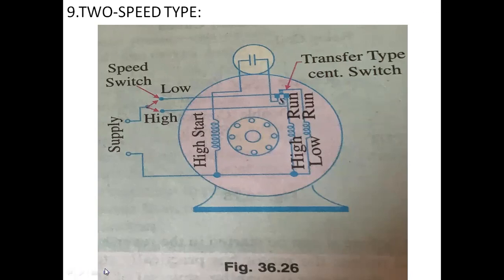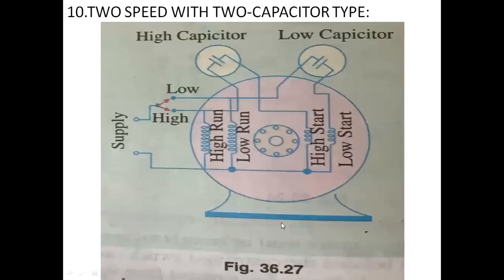Last type: two-speed with two capacitor type. Two capacitors are used with two speeds. This motor has two running windings — high and low — two starting windings — high and low — and two capacitors. One capacitor is used for high-speed operation and the other for low-speed operation. A double centrifugal switch is employed for cutting out the starting winding after starting.